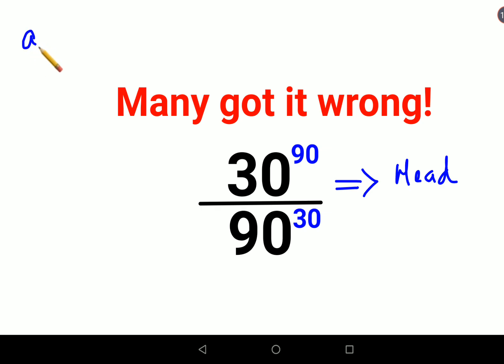One very important thing to remember about indices is a raised to m the whole raised to n is nothing but a raised to m into n. So similarly, this 90 over here, 30 raised to 90 - instead of 90 I will write this as 30 raised to 3 the whole raised to 30.